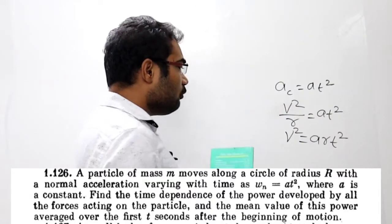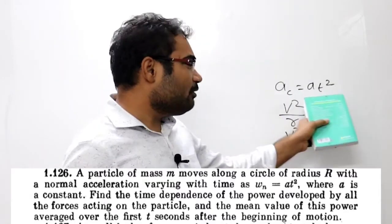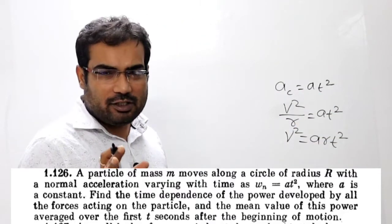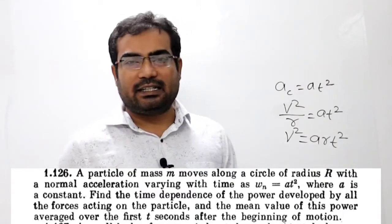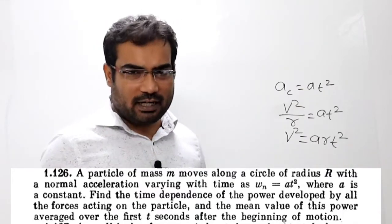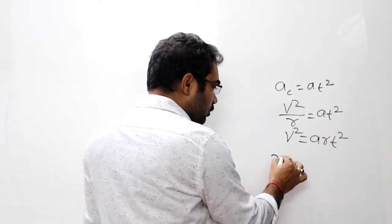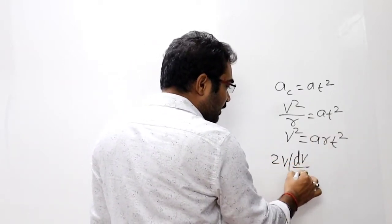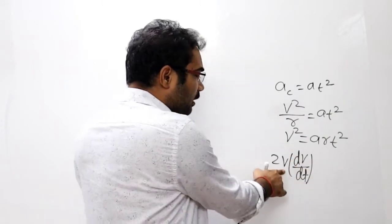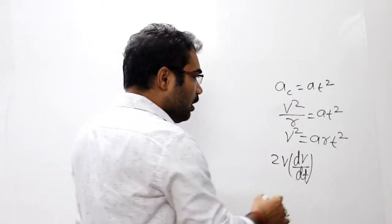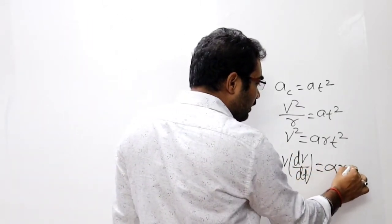Differentiate kar dijiye. V squared centripetal acceleration ka jab equation diya ho, toh seedha differentiate kar dijiye ga, mass se multiply kar dijiye ga, power. Toh power kitne ke barabar hai ga. Isko differentiate kar dijiye: 2V, or V ka differentiation dV by dt. V squared ka: 2V, or V ka dV by dt, and that is equal to alpha R.